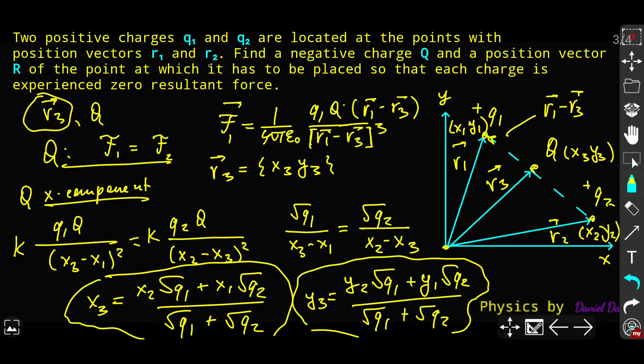We've now got the expression for R3, identifying its components through the components of vectors R1 and R2. Whether we're given the absolute value and angle of R1 and R2, or the coordinate sets X1, Y1 and X2, Y2, we've got the coordinates of the position vector pointing to charge Q. Now the remaining part is to identify the charge value, which we've established will be negative.